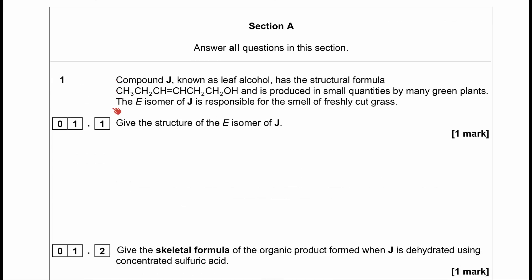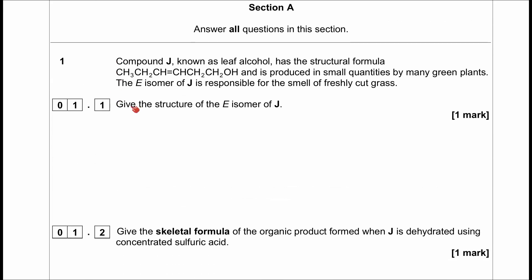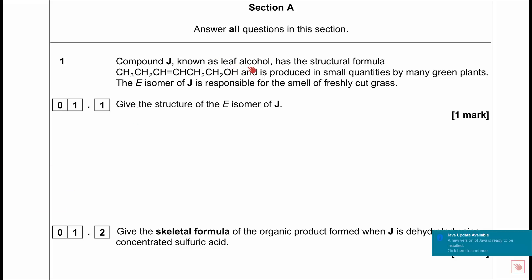Question 1: you've got compound J, known as leaf alcohol, which has the structural formula CH₃CH₂CH=CHCH₂CH₂OH and is produced in small quantities by many green plants. The E isomer of J is responsible for the smell of freshly cut grass. They're throwing you off here - first they're giving you this name 'leaf alcohol', but you're not supposed to know what that is. Compound J is all that matters, and you're given the structural formula.